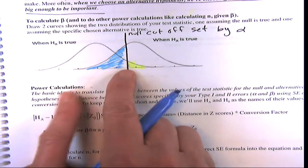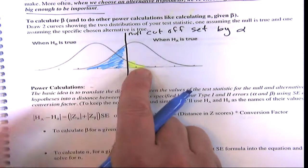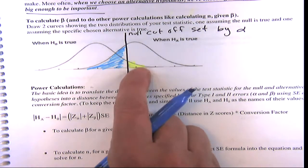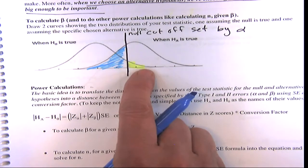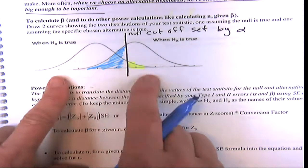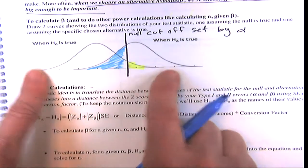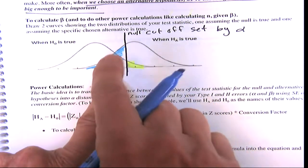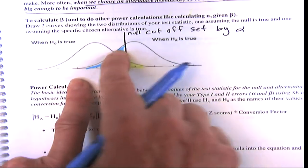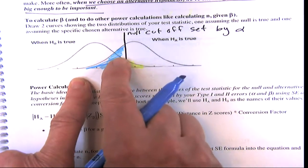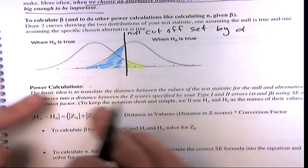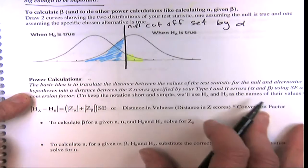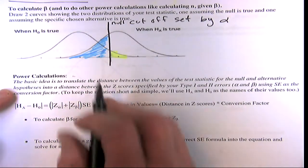We have one decision maker — the null cutoff — and we're making mistakes both ways. We have to weigh the probability of one type of mistake versus the other. Setting alpha is a judgment call depending on how serious it is to make a mistake when the null is true. The convention is to set it to five percent. Then if we know the sample size and standard error, we can figure out the area for the Type 2 error.